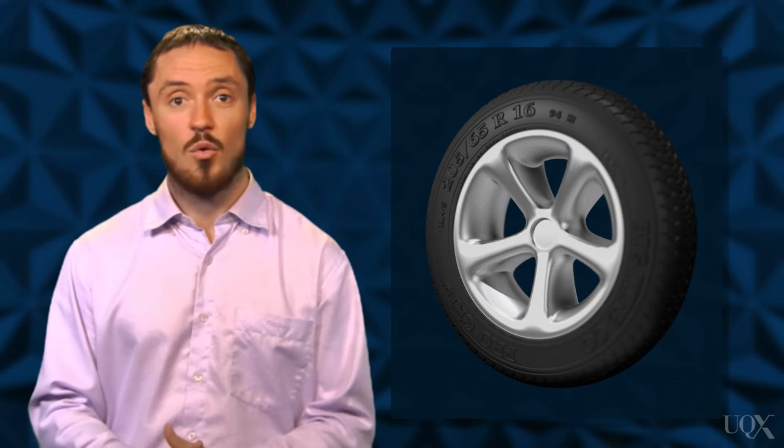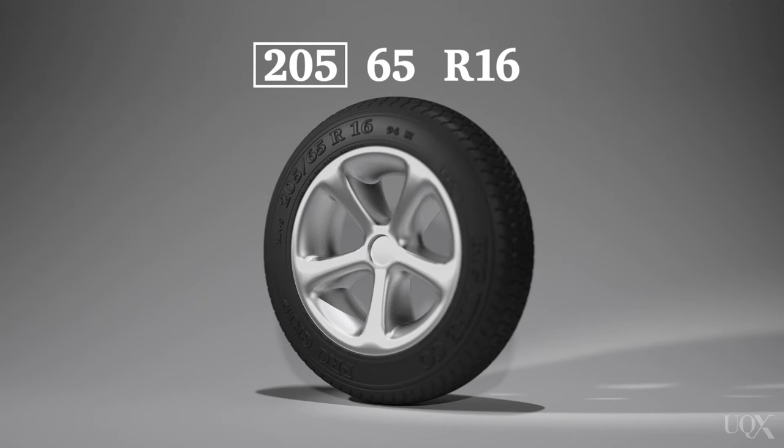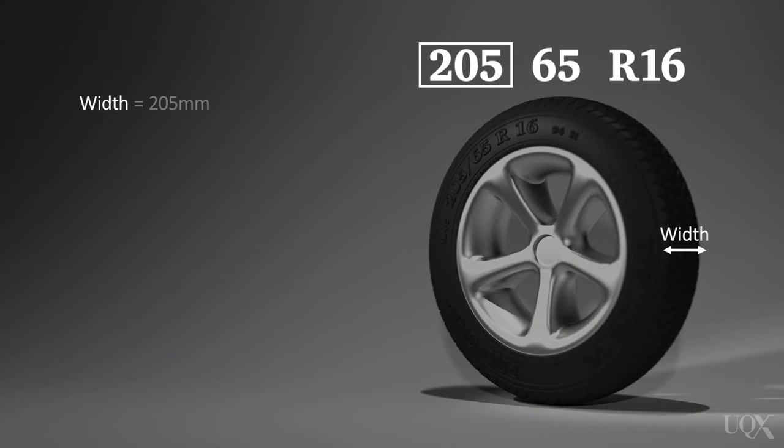Here we have a tyre. We will use the tyre code to solve the problem. The first number is the width of the tyre in millimetres. In this case, 205mm.